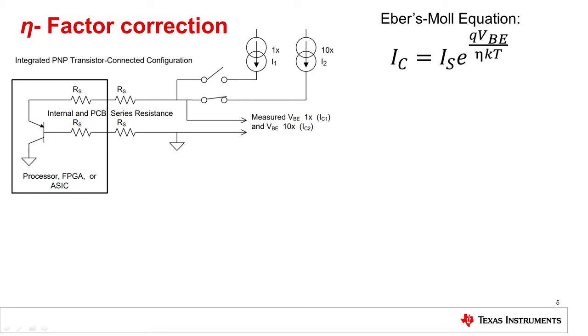The simplified Ebbers-Mohle equation tells us the collector current through the attached thermal diode is due to the reverse saturation current, which is the property of the BJT being used, and the voltage across the base emitter junction. In order to eliminate the effect of the reverse saturation current, we switch between two different magnitude current sources and evaluate the difference between the base emitter voltages under both biasing conditions. A functional schematic of this method is pictured on the left-hand side of this slide.